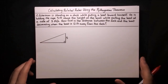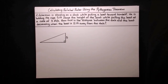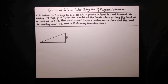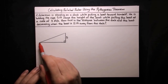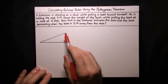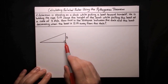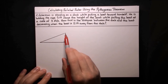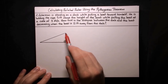On to the next question. A fisherman is standing on a dock while pulling a boat towards himself. He is holding the rope 5 feet above the height of the boat while pulling the boat at a rate of 3 feet per second. How fast is the distance between the dock and the boat decreasing when the boat is 12 feet away from the dock? Here's our setup — it's just a triangle. The boat is on one side, the rope is the hypotenuse, elevated 5 feet from the top of the boat where the fisherman is pulling.